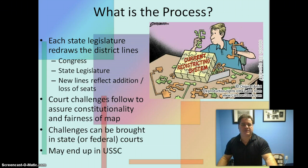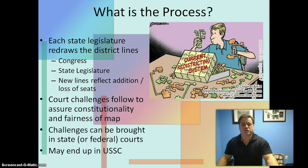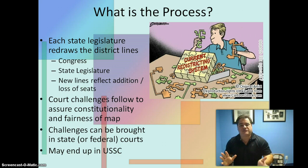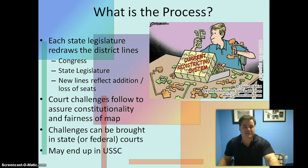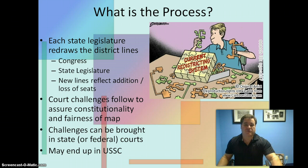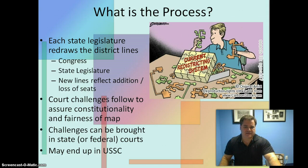The Census Bureau tells each state how many people live there and how many congressional districts they get. It's then up to each state legislature to redraw the district lines for Congress — the House of Representatives — and for the state legislature. Those lines represent the addition or loss of seats. If you live in a state like Illinois, which used to have 20 congressional seats and loses one, they've got to redraw the whole map and subdivide Illinois into 19 districts rather than 20. That affects the state legislature as well.